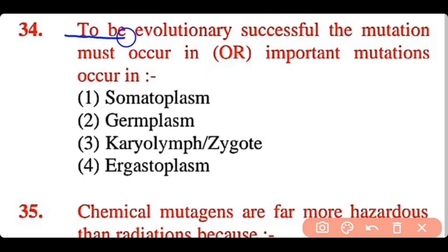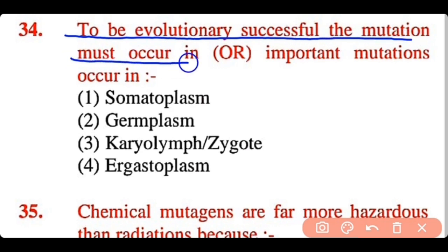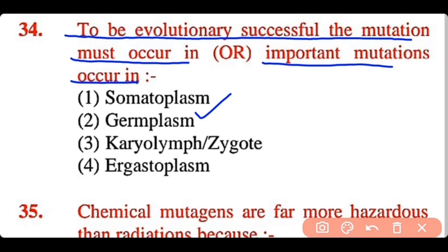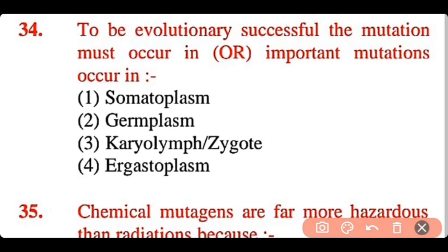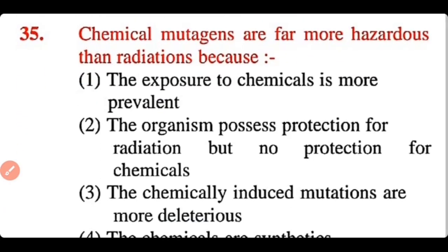Question 34: To be evolutionary successful, the mutation must occur in: somatoplasm, germoplasm, karyolymph, zygote, or gastroplasm. The correct answer is option 2. To be evolutionarily successful, mutation must occur in the germoplasm.